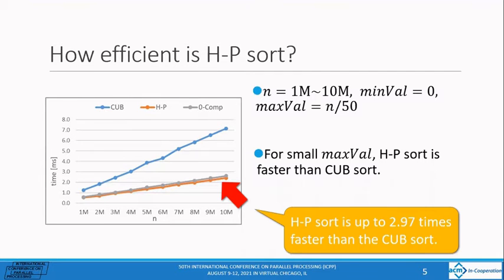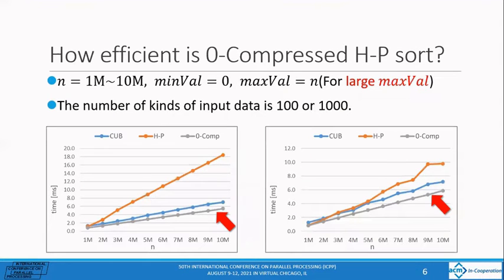The HP-sort is effective for non-distinct data with small max val. Let's take the case where max val is very small, such as 1/50 of n. In this case, HP-sort was 2.97 times faster than cub-sort. When max val is small, HP-sort is faster than zero-compressed HP-sort.